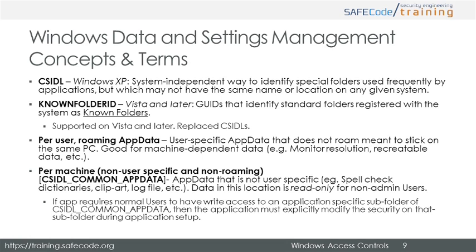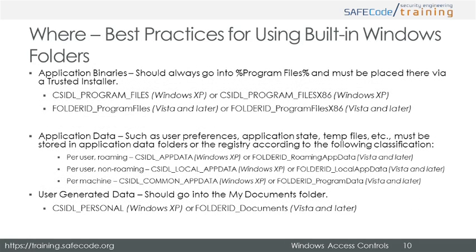Per user, roaming app data is application data specific to individual users; use this to maintain and refer to settings for individual users. Per machine, non-user-specific and non-roaming app data corresponds to CSIDL common app data — this is application data that is user independent, such as a spell check dictionary, clip art, or log files. Data is read-only for everyone except the administrator. If an application needs to write to a subfolder of CSIDL common app data, the application or installer must explicitly modify permissions during setup. Always install applications in system folders such as program files. Use application data folders to store application data, and save temporary files, user-generated data, and user application settings in per-user folders.